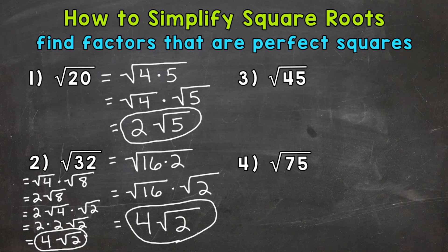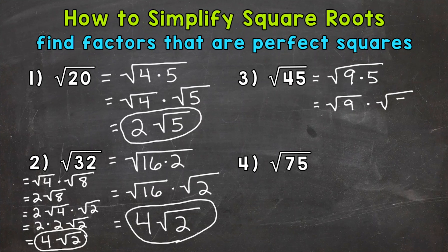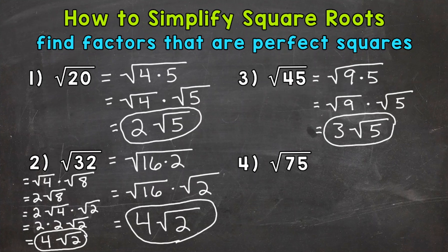Let's move on to number 3, the square root of 45. Any factors that are perfect squares? Yes — 9 and 5 are factors of 45, and 9 is a perfect square. So the square root of 45 equals the square root of 9 times 5. Splitting: the square root of 9 times the square root of 5. The square root of 9 is 3, and √5 cannot be simplified further. So our answer is 3 times the square root of 5, or 3√5.